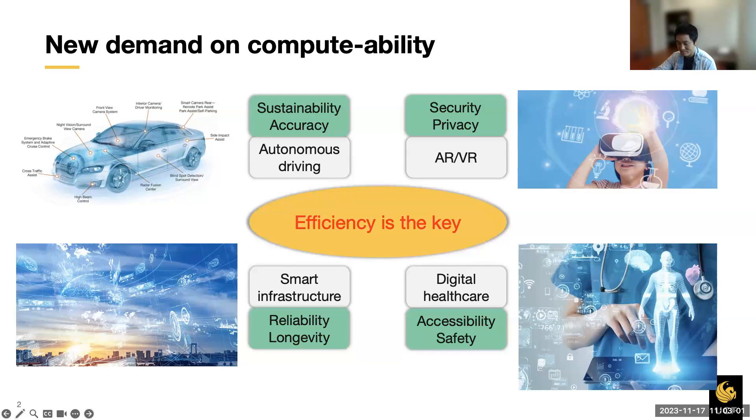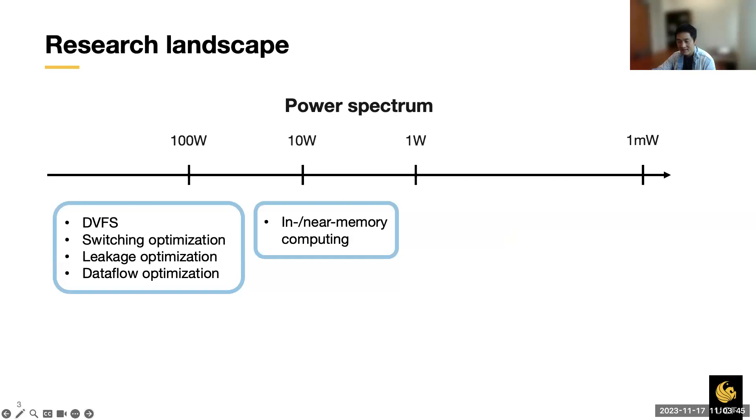From my perspective as a computer architect, computer efficiency is key to live up to the promises of those systems. Properties like sustainability and accuracy in autonomous driving, security and privacy in AR/VR, reliability and longevity in smart infrastructure, accessibility and safety in digital healthcare are all made possible by how efficient the hardware architecture is designed. However, we still have a long way to go. There's a gap of several orders of magnitude between what is needed and what is achievable in terms of power efficient design.